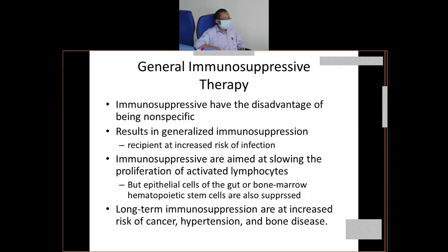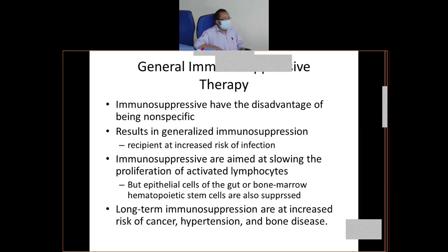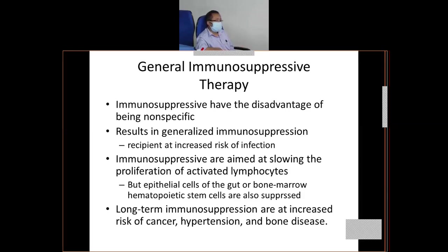Another issue is that the bone marrow is not only producing T lymphocytes but also producing hematopoietic cells. By doing immunosuppression, you are basically reducing hematopoiesis also. These individuals will suffer more from anemia. And there is evidence that long-term immunosuppressive treatment can lead to generation of cancer, hypertension, and bone diseases like osteoporosis.